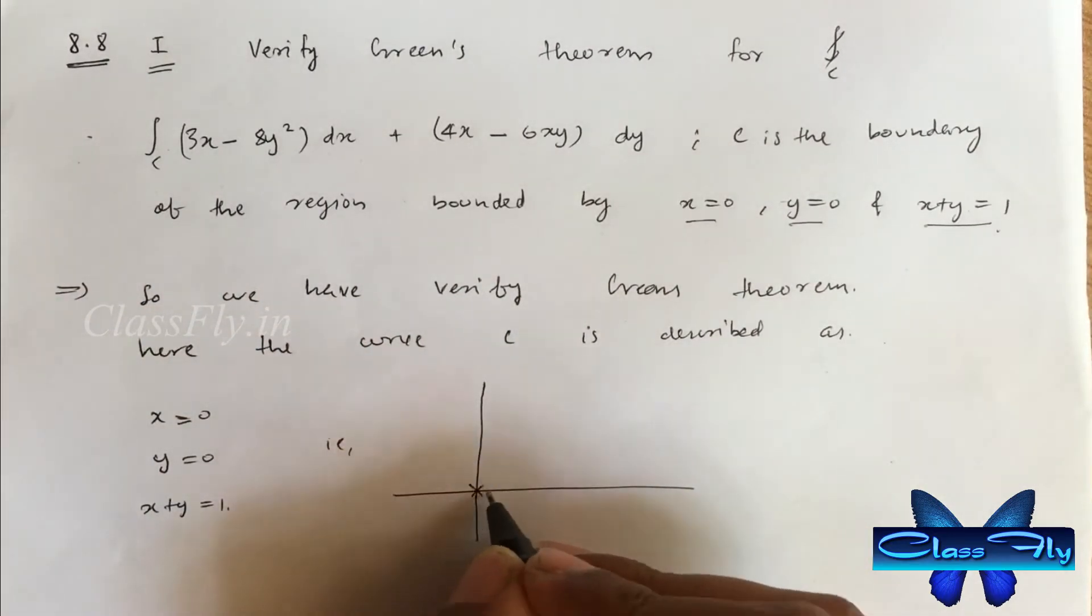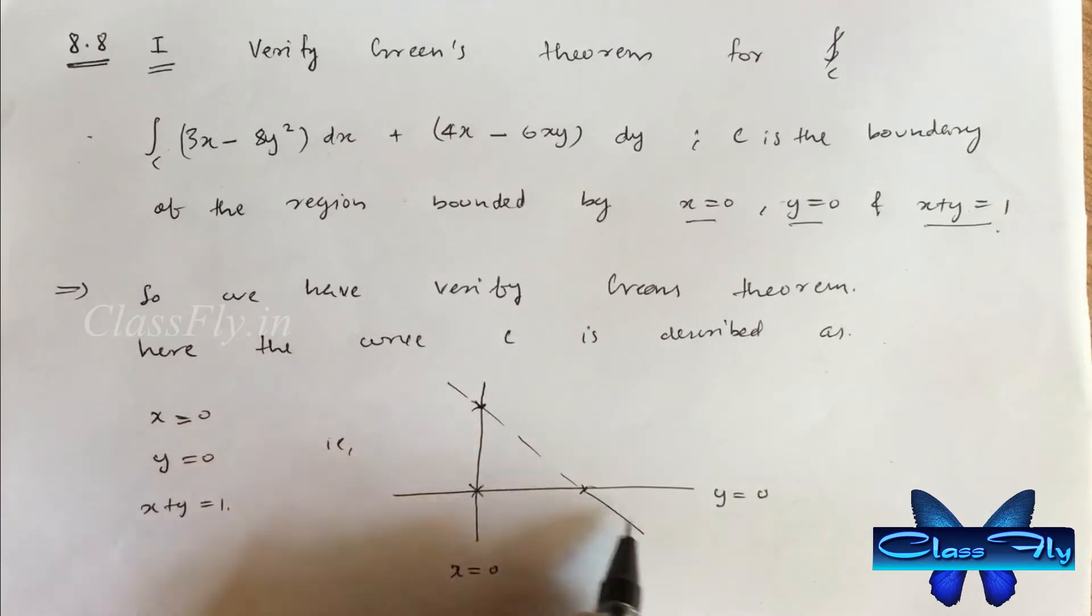Let's check out the diagram. Here we have the three lines x equal to 0, y equal to 0 and x plus y equal to 1 and mark a direction in the anticlockwise direction.